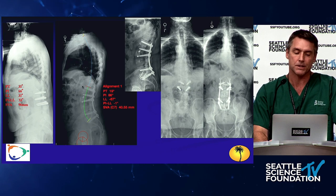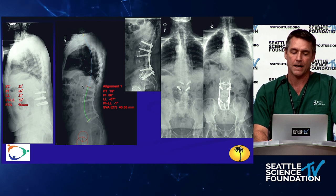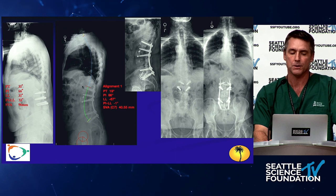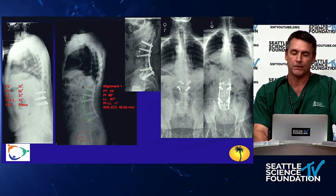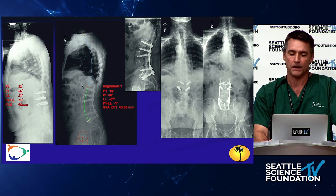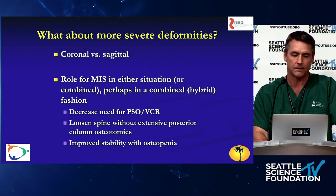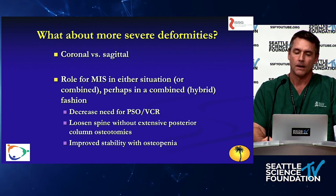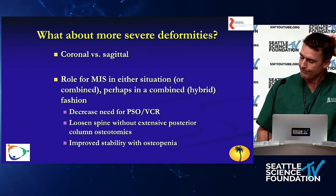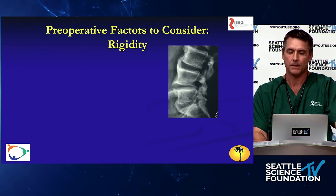Here's an example of a gentleman who had an MIS correction of his sagittal plane deformity. He had prior lumbar fusion below, corrected with an ACR above his prior fusion, plus percutaneous screws below and a mini-open ALIF at the base. This demonstrates the ability to correct reasonably significant deformities through MIS techniques. Even the more severe deformities can now potentially be addressed.